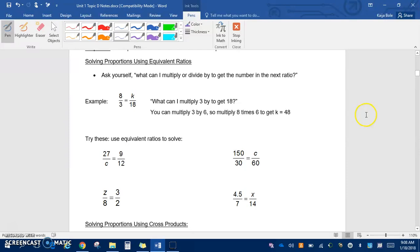In the example here, we have 8 over 3 equals k over 18. Before, we were asking ourselves what can I multiply 3 by to get to 18. We drew our arrows and said we'd multiply by 6, so we multiply by 6 up here and get that 48 equals k.